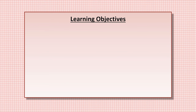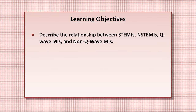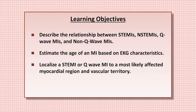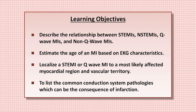The specific learning objectives are: first, to describe the relationship between ST-elevation MIs or STEMIs, non-ST-elevation MIs or N-STEMIs, Q-wave MIs and non-Q-wave MIs. Second, to estimate the age of an MI based on EKG characteristics. Next, to localize a STEMI or Q-wave MI to a most likely affected myocardial region and vascular territory. And last, to list the common conduction system pathologies which can be the consequence of infarction.